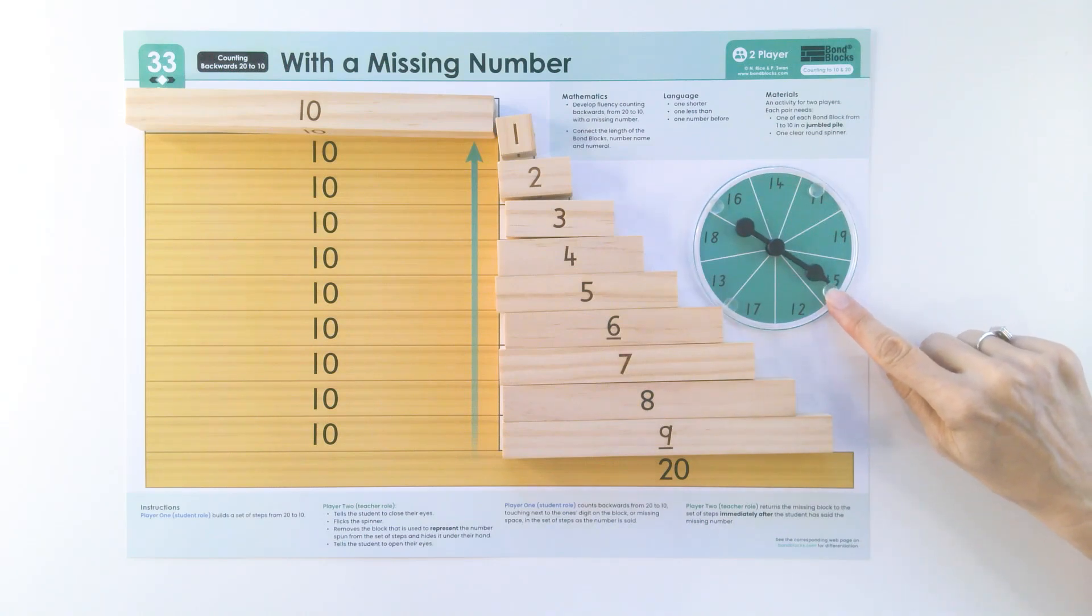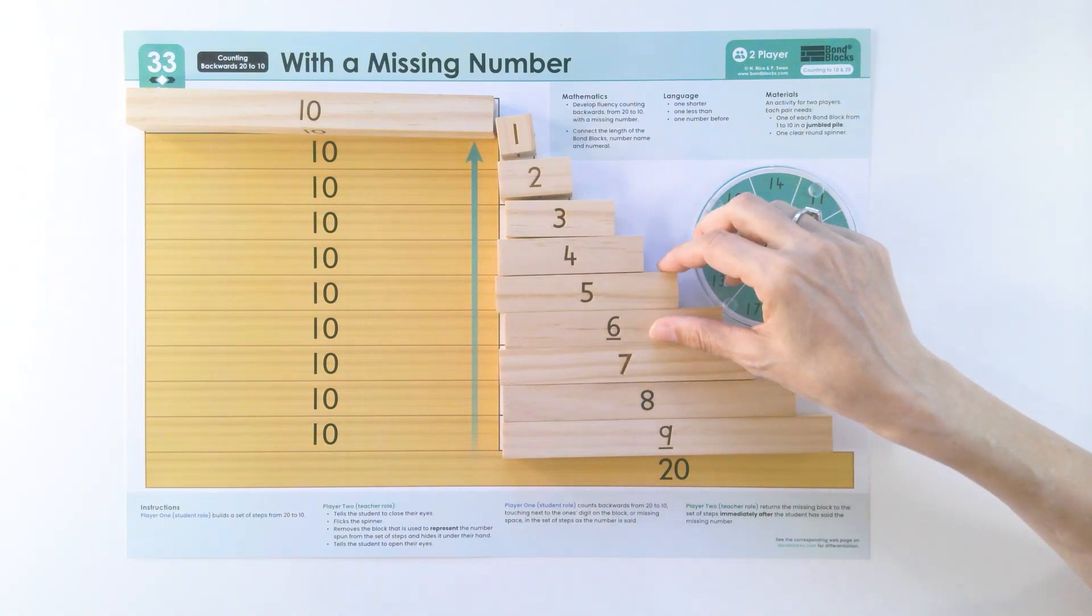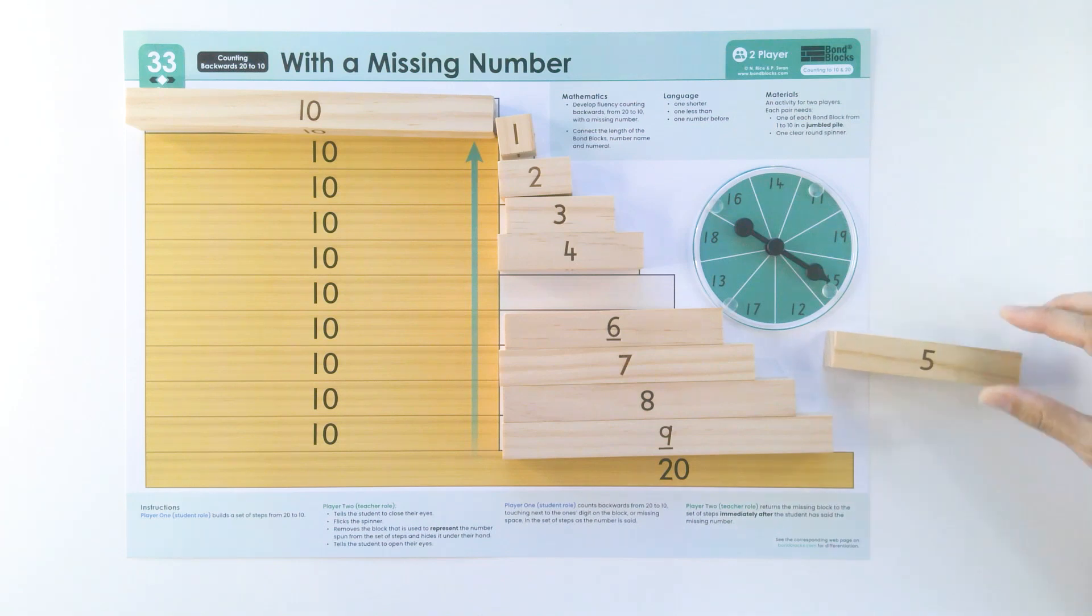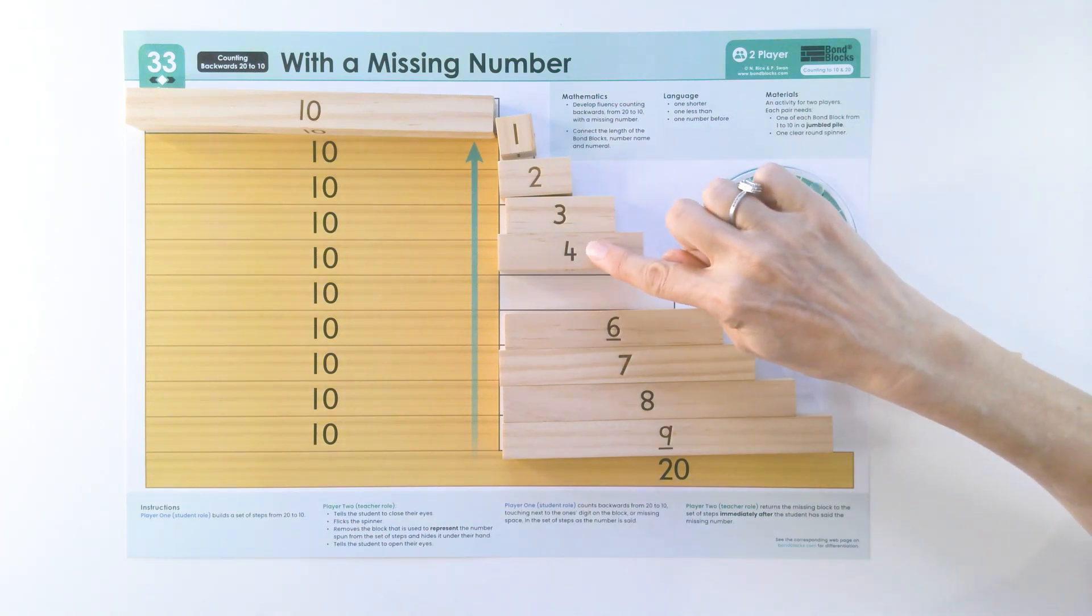I remove the block that represents the number spun, and I also remove the block that is one less, or the number that is one before.